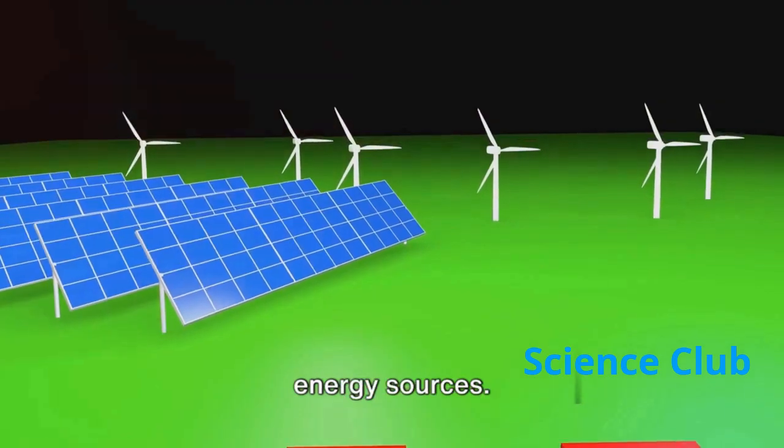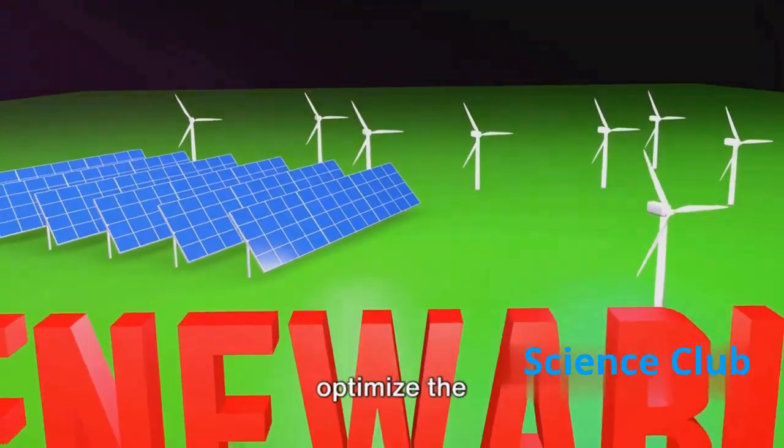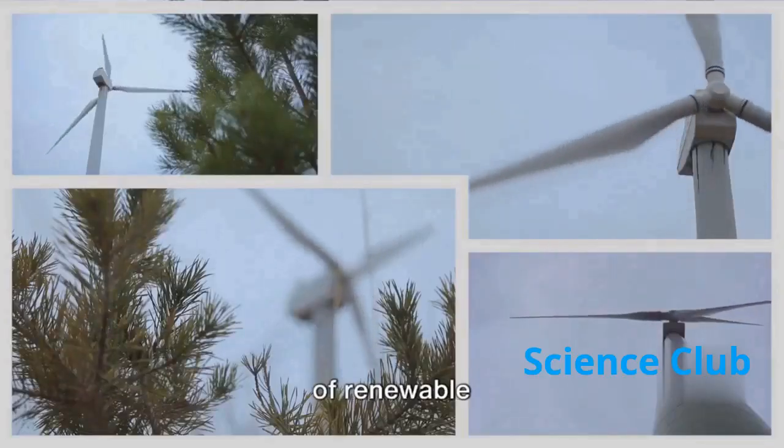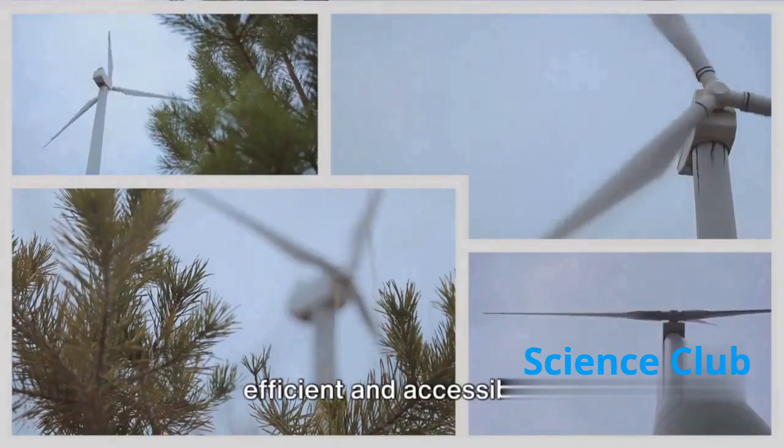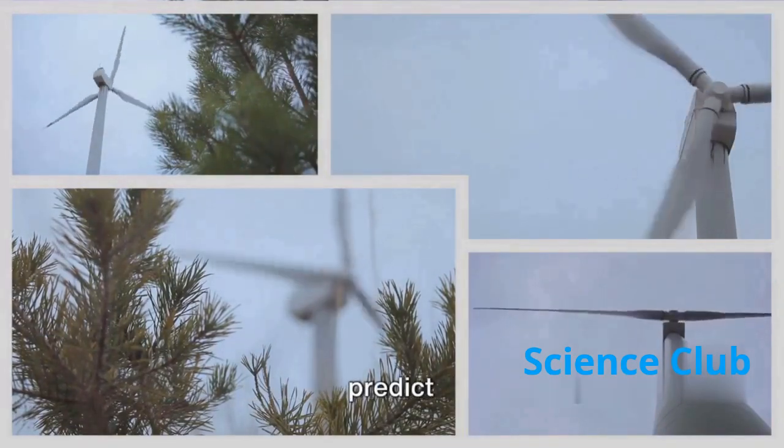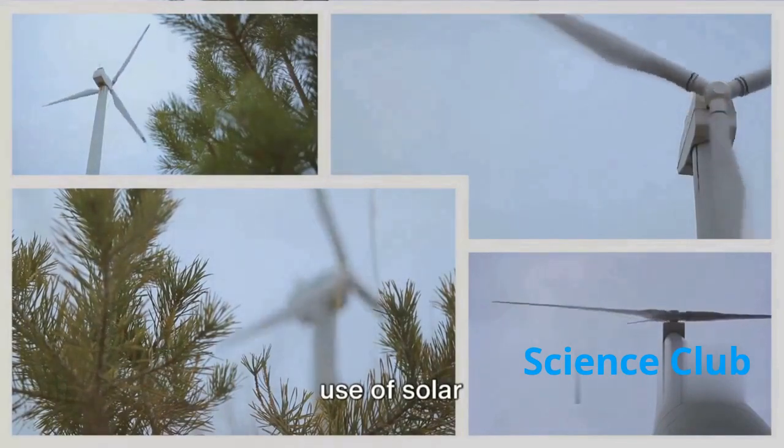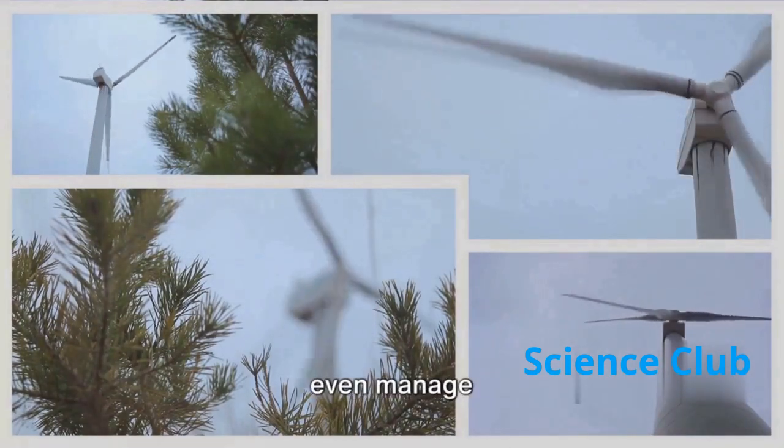Let's start with renewable energy sources. AI can optimize the production and distribution of renewable energy, making it more efficient and accessible. It can predict weather patterns to maximize the use of solar and wind energy, and even manage energy grids to reduce wastage.